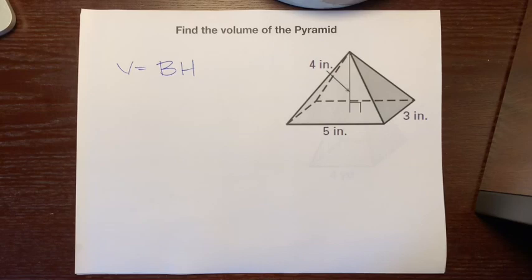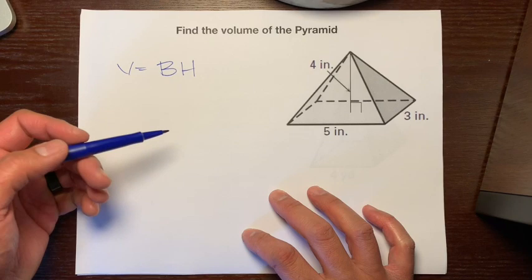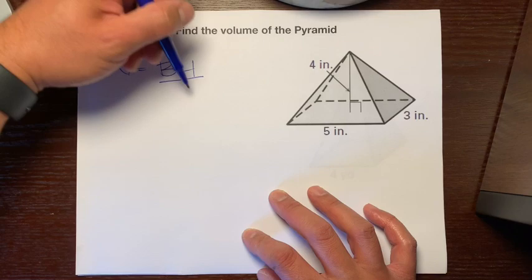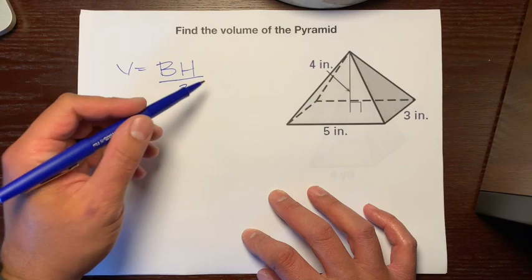So let's use what we learned from our experiment at the sink to find the volume of this pyramid right here. This right here is the formula for the volume of a prism. But as we just noticed that a pyramid only takes one-third of the space or a third of the cubes fit inside of the pyramid. So let's just divide this by three.